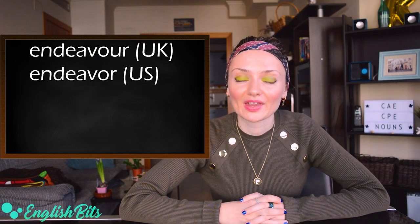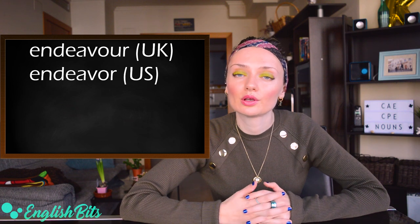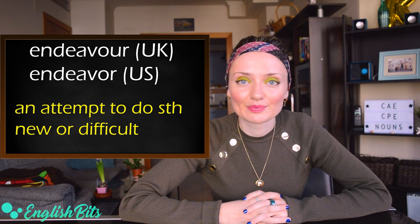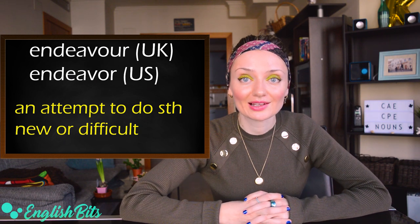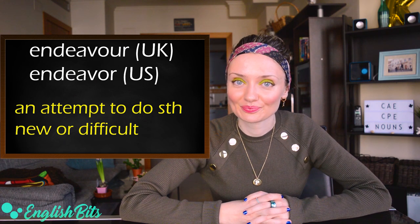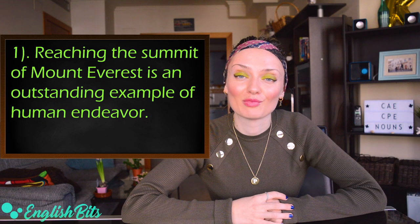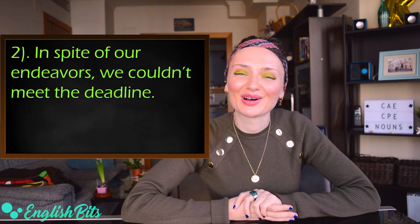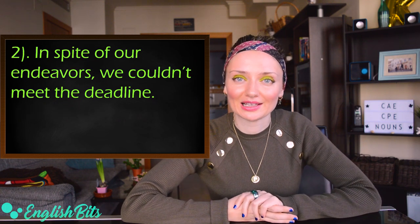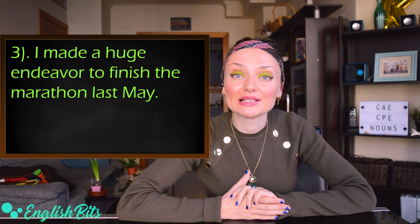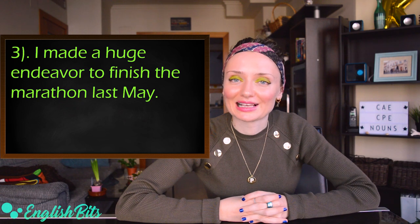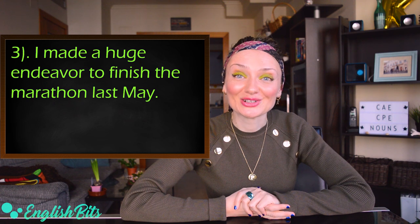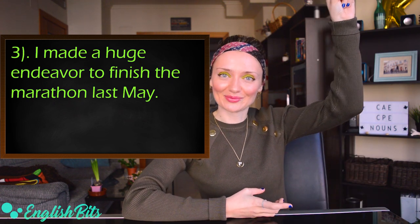Number five is endeavour — a formal noun which means an attempt to do something new or difficult. It's spelled with a 'u' in British English and without a 'u' in American English. Examples: 'Reaching the summit of Mount Everest is an outstanding example of human endeavour.' 'In spite of our endeavours, we couldn't meet the deadline.' 'I made a huge endeavour to finish the marathon last May.'